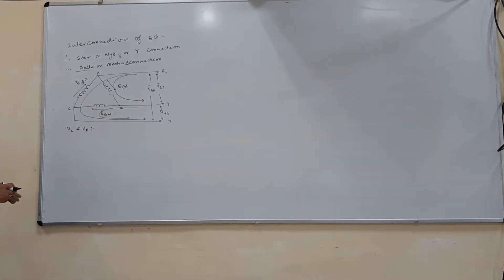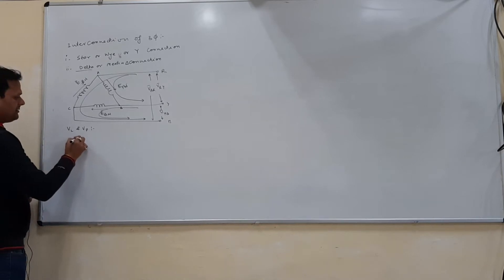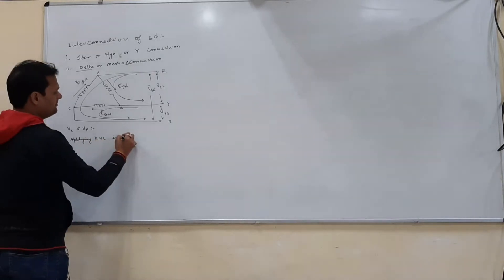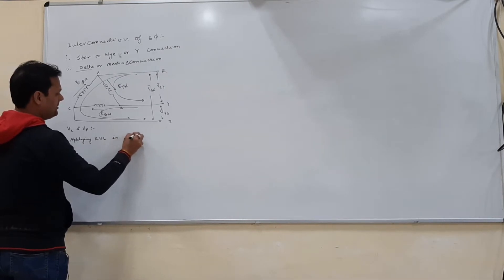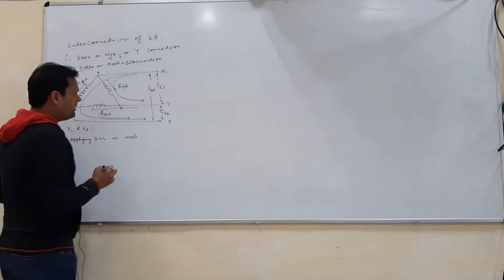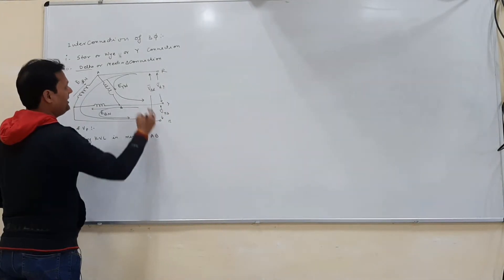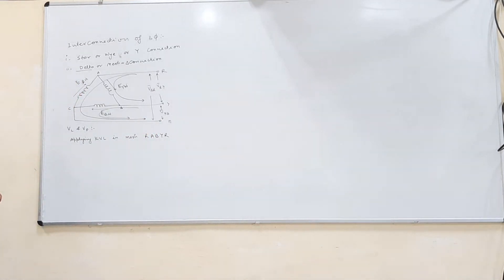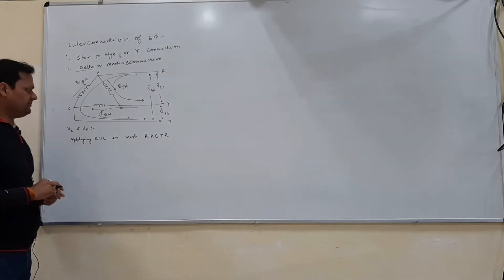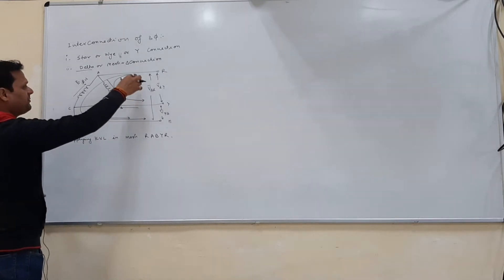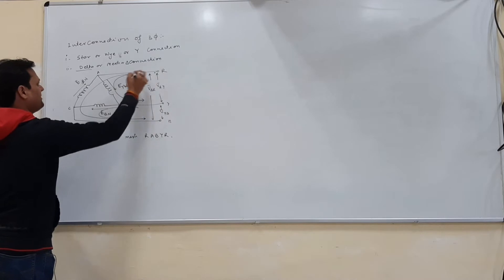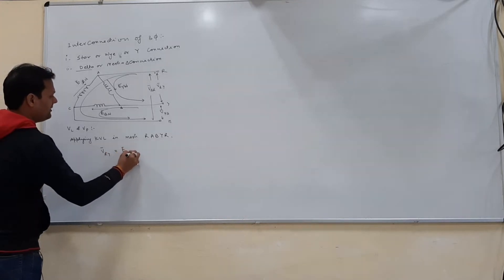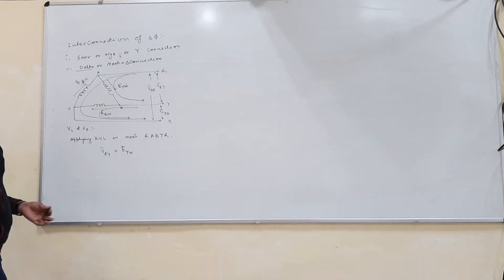In these three loops, we will apply KVL. Applying KVL in mesh RAB-YR, if we consider the polarity with plus on one side, then VRY bar simply equals to EYN, since there is no other voltage in this loop.